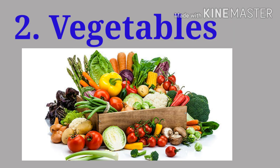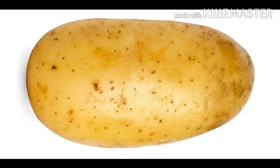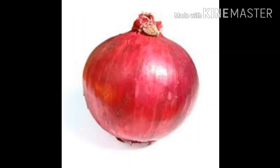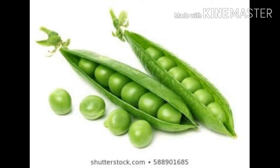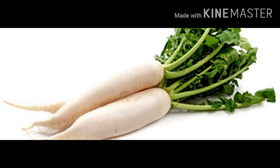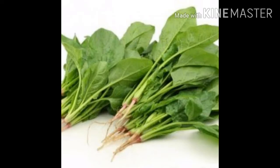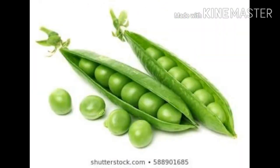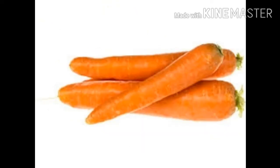Number two: vegetables. Potato, onion, cabbage, pumpkin, pea, radish, carrot, lady's finger, and spinach are vegetables we eat. Vegetables need to be washed, cut, and cooked before we eat them. Some vegetables such as onion, pea, and carrot can be eaten raw or cooked.